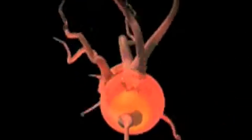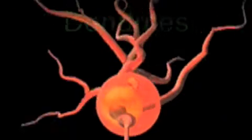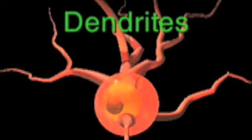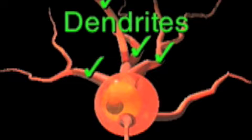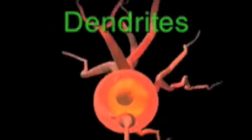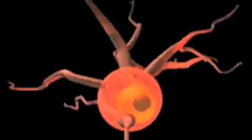Dendrites receive information from the axons of other neurons. A typical neuron may have many dendrites, which resemble the trunks and branches of trees. And in fact, the word dendrite comes from a Greek word meaning tree.